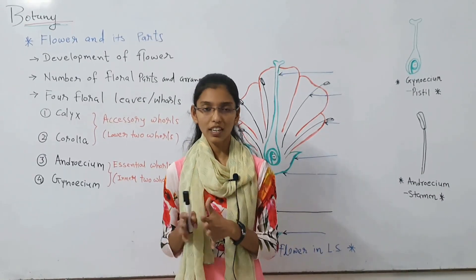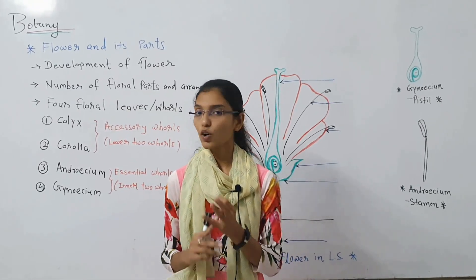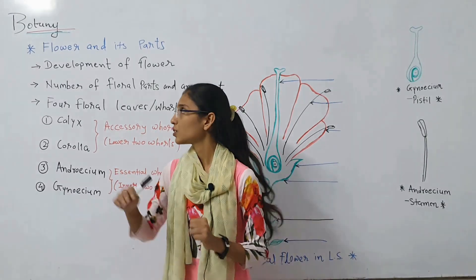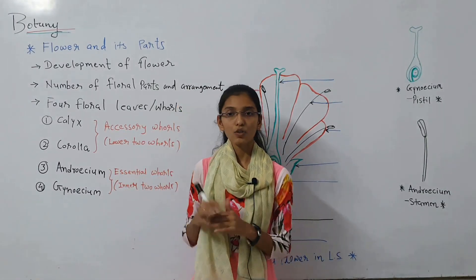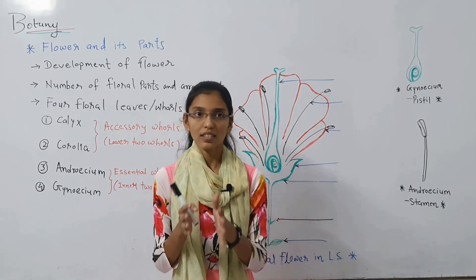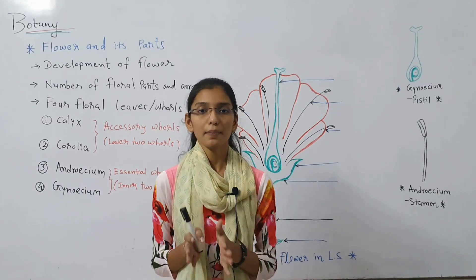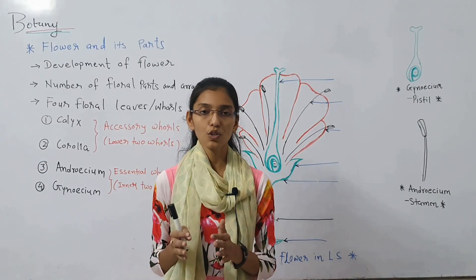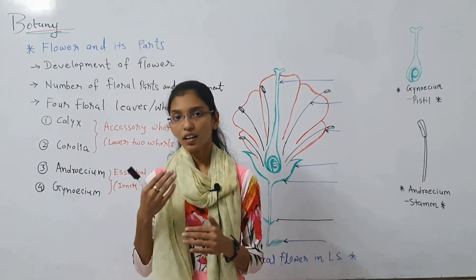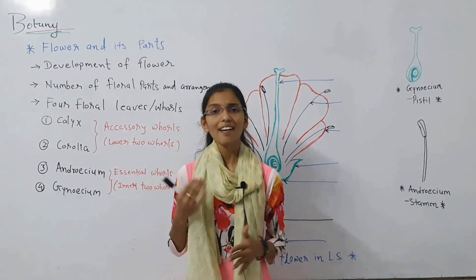The flower is the reproductive part of the plant. The flower develops from the plant's stem apex, where the vegetative parts — through metamorphosis — have their properties converted into the reproductive unit, converting into the flower.